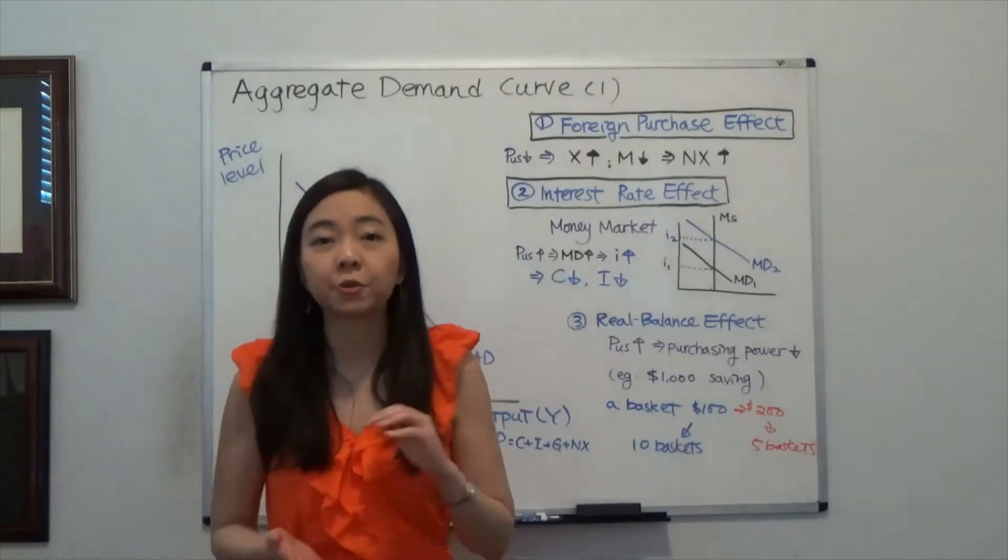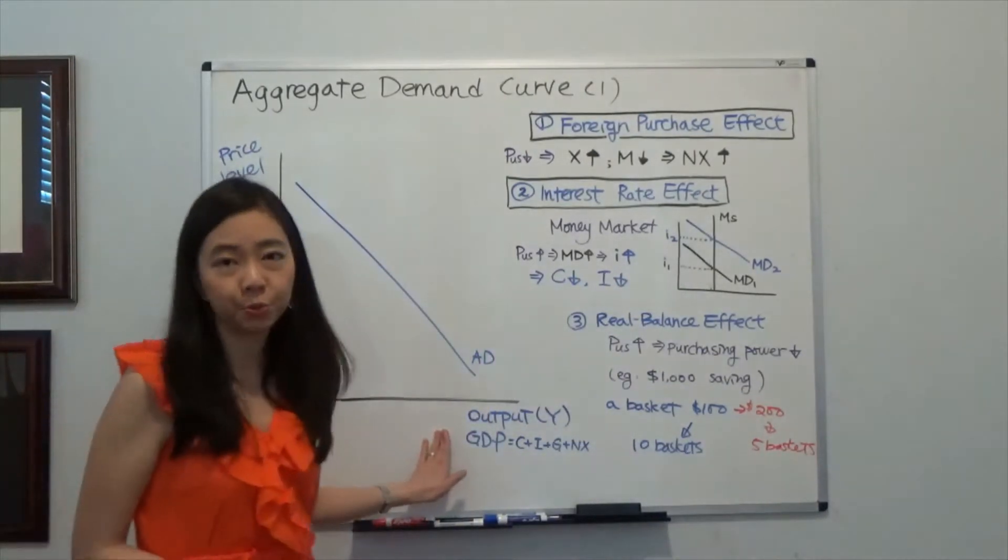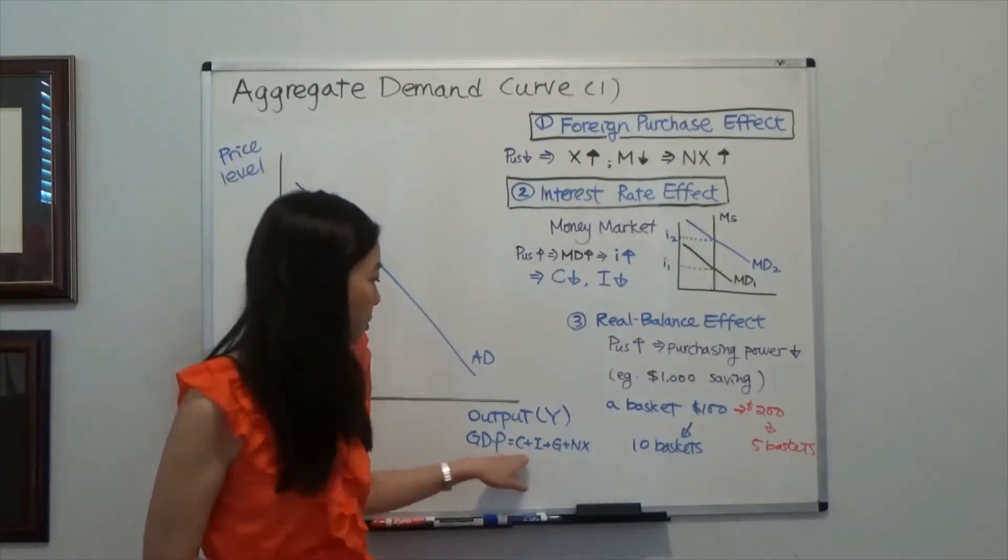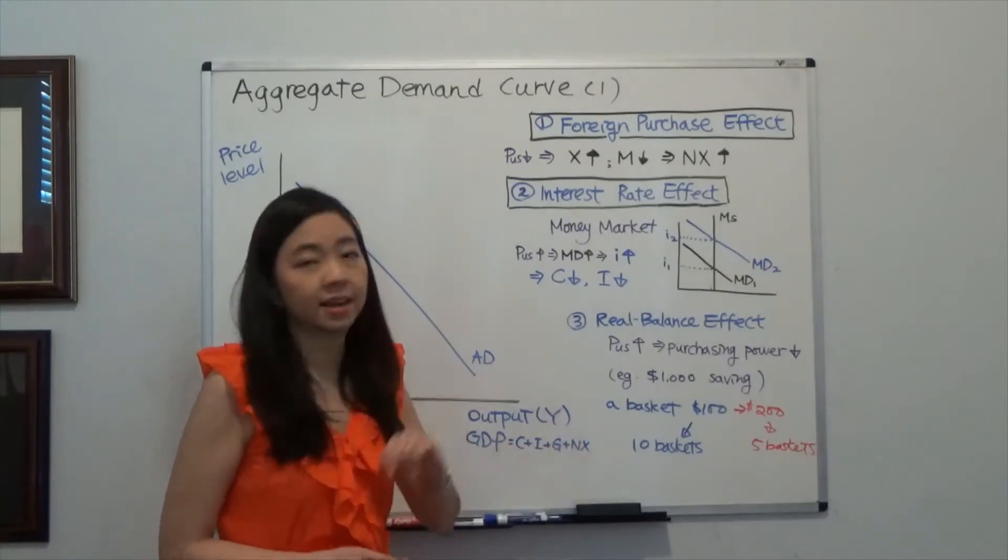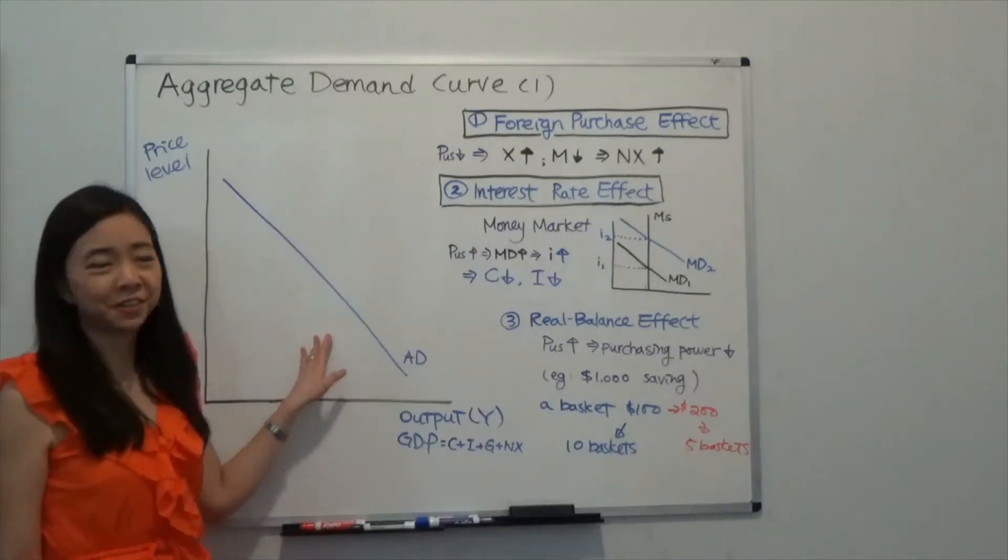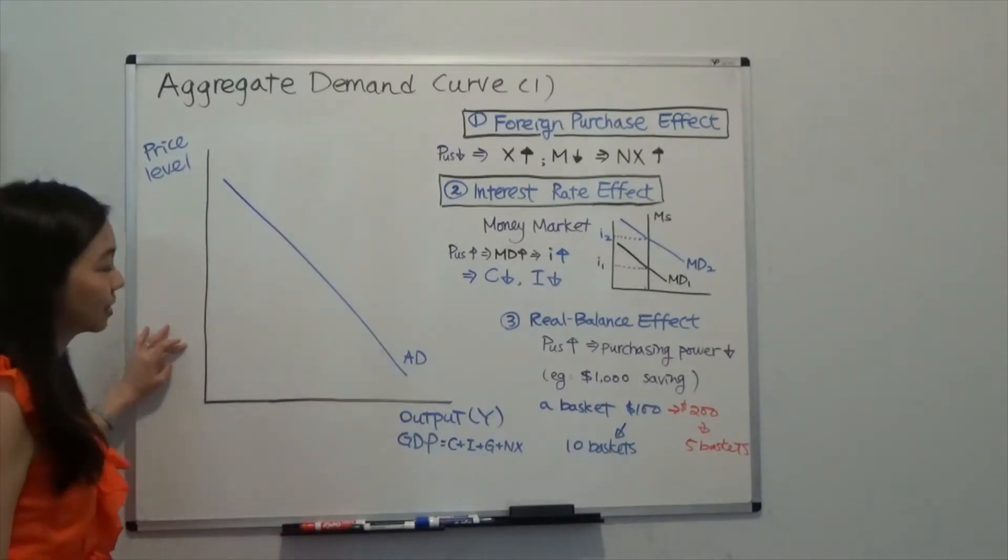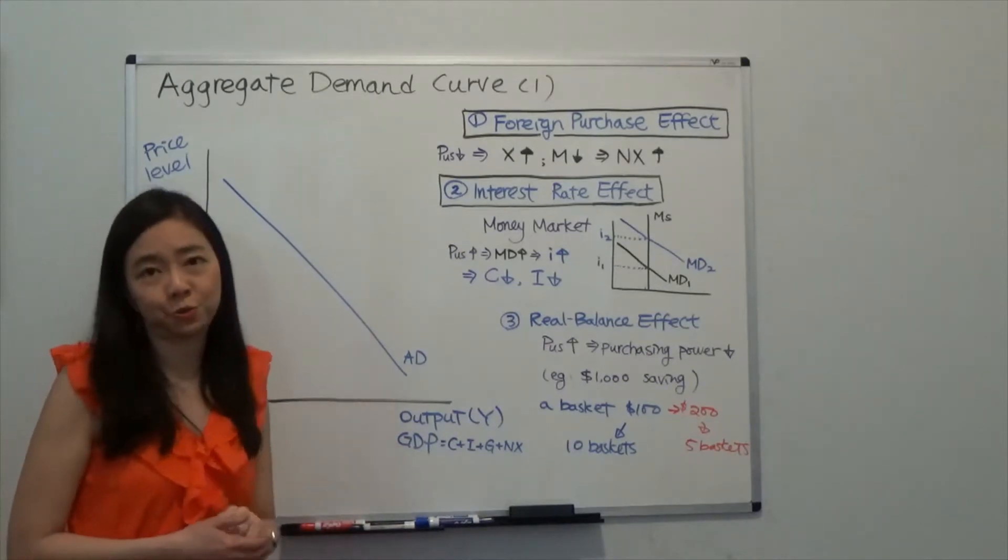We know aggregate demand curve tells you the relationship between the price level and the output demanded. And if you remember, our GDP is equal to consumption plus investment plus government spending plus net export. Now, as you can see, the aggregate demand curve is negatively sloped, meaning when the price level is lower, then the aggregate output demanded is going to go up.